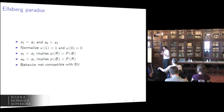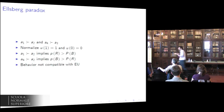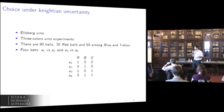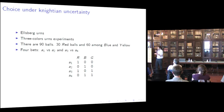The Ellsberg paradox is a good reason to move away from the expected utility paradigm. Let's go back to the Ellsberg example. Probably most of you have seen this thought experiment many times, but let me make a long story short. Typically people feel compelled to prefer bet A1 over A2. Bet A1 pays 1 euro if the color of the ball drawn is red, and zero otherwise.